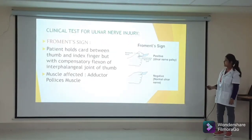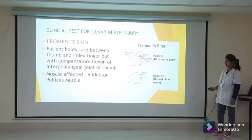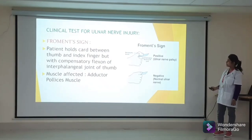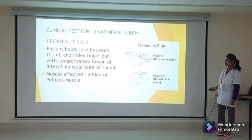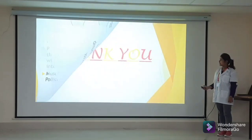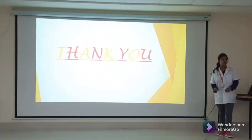The clinical test for ulnar nerve injury is Froment's sign, where the patient holds paper between the thumb and index finger but compensates by flexing the interphalangeal joint of the thumb due to weakness of adductor pollicis.